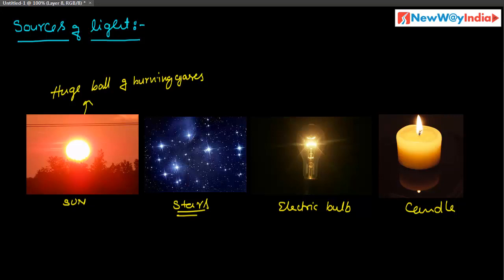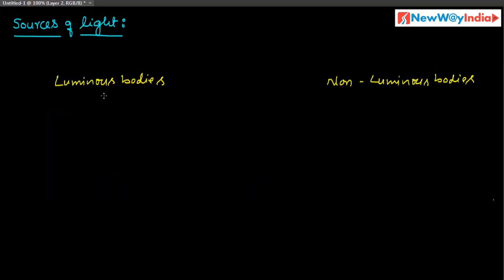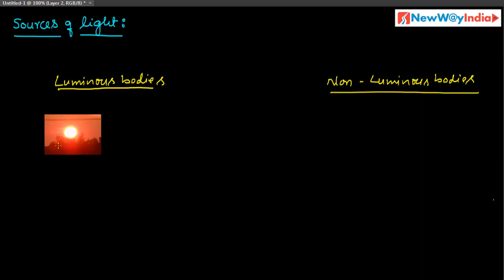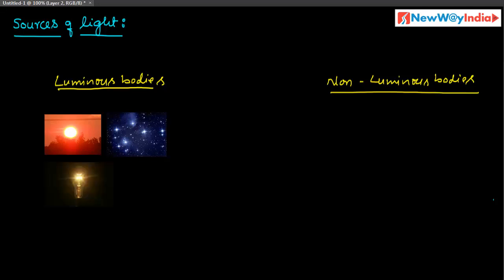Now let us discuss about some important terms: luminous bodies and non-luminous bodies. Bodies which can give light energy by themselves are called luminous bodies. The Sun can give light energy by its own — it is a luminous body. Stars are also luminous bodies as they give light energy by themselves. An electric bulb and a candle are also luminous bodies — they can give light by their own.